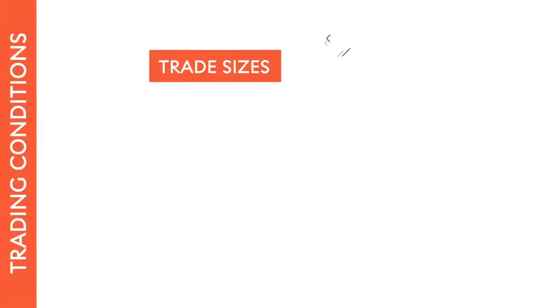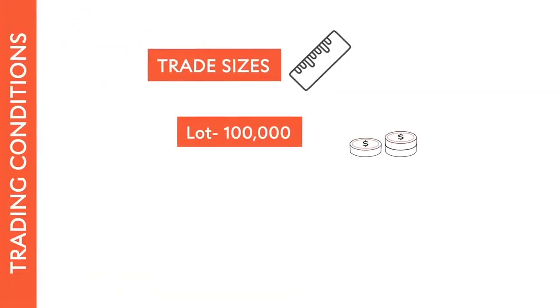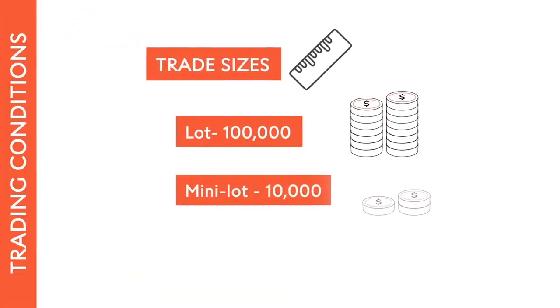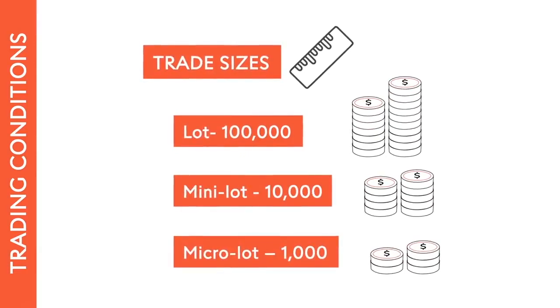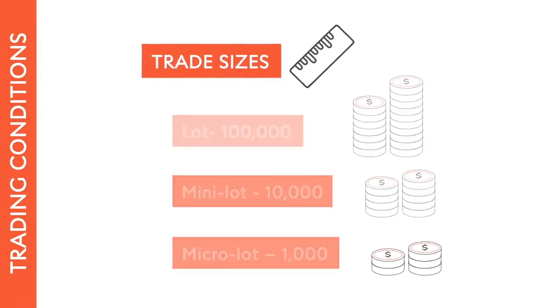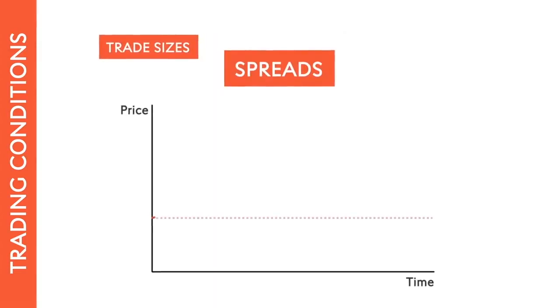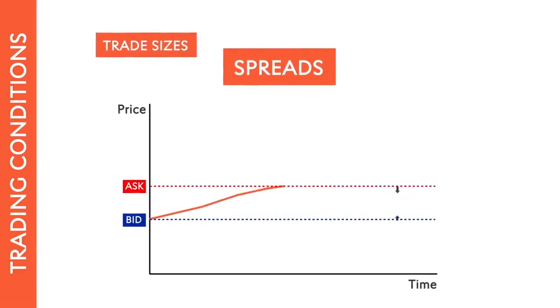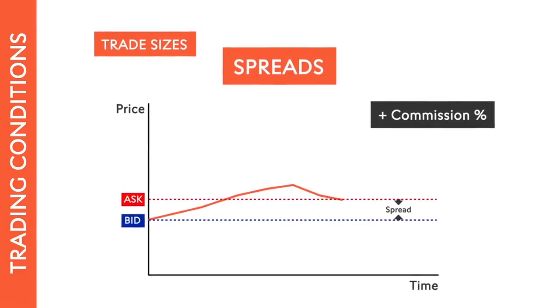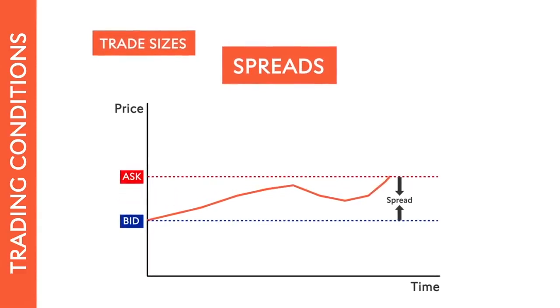Once you have considered the regulatory body of your potential brokers, the next step is to consider your own needs. For example, some brokers prescribe certain trade sizes or attach conditions to them. Ensure that your broker enables you to make the trades you desire. You might also look at spreads, since they can heavily influence transaction costs.